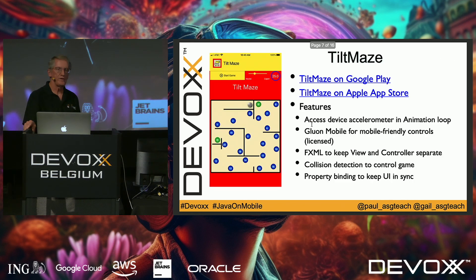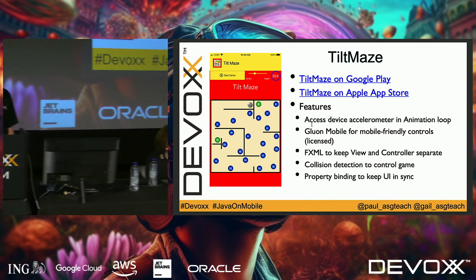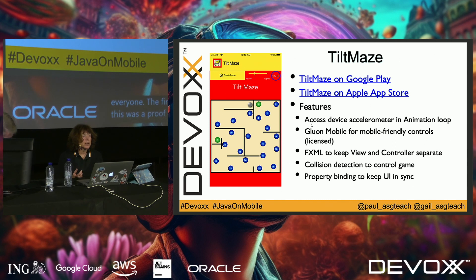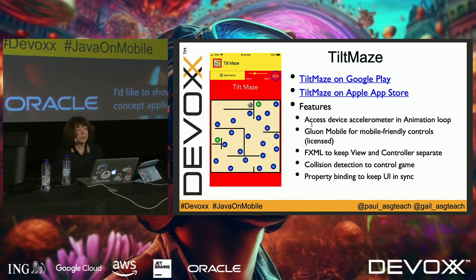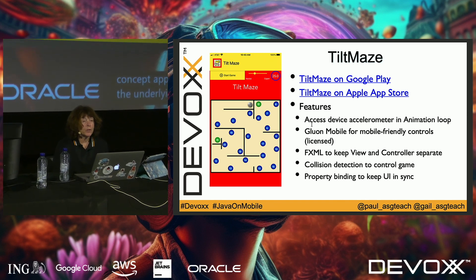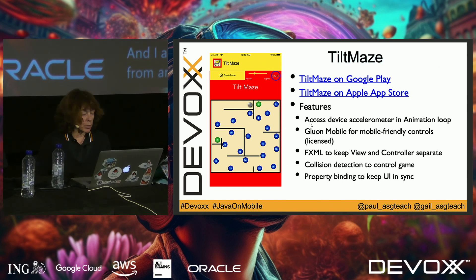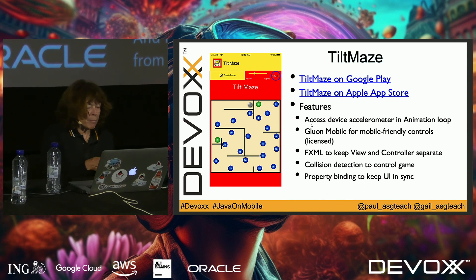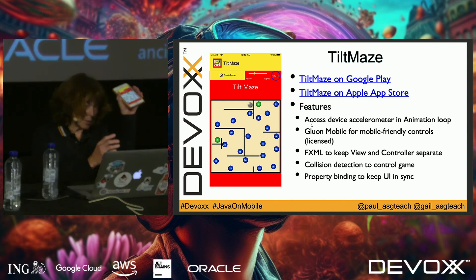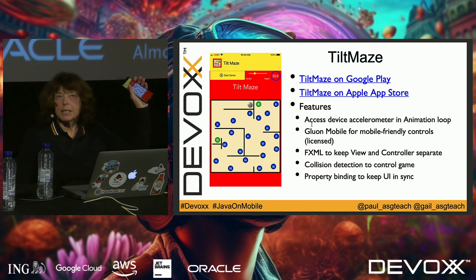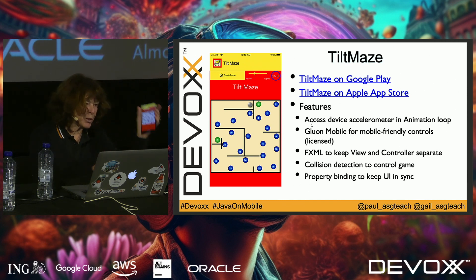I'm going to turn it over to Gail now to show the demos. The first demo is Tilt Maze, a proof-of-concept application. I wanted to use the underlying hardware device in a device-agnostic way and see what work was required to get it from idea into the app store. I have it running on my iPhone and also on a Google Pixel 6 Android phone — same JavaFX source code.